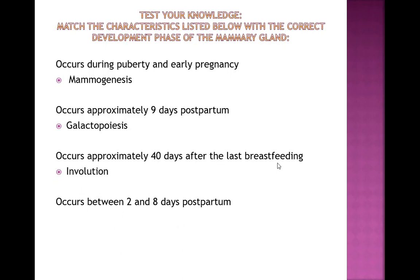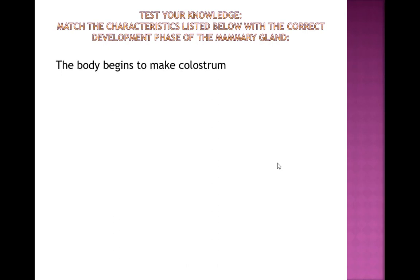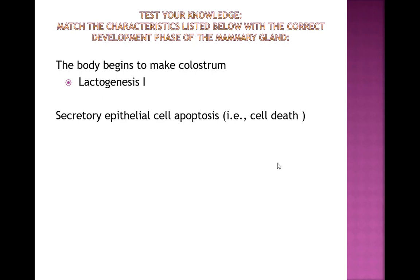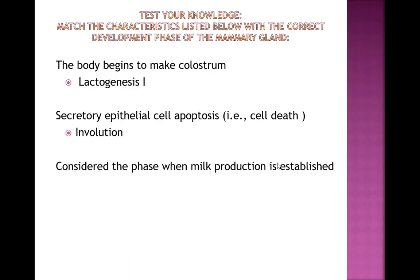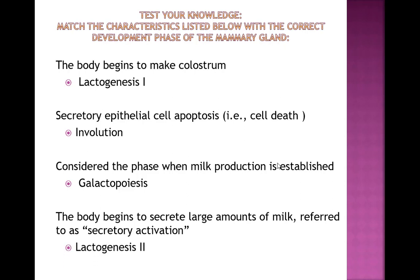Which phase occurs two to eight days postpartum? — Lactogenesis 2. Which phase occurs from mid-pregnancy to two days postpartum? — Lactogenesis 1. When does the body begin to make colostrum? — Lactogenesis 1. Which phase is referred to as secretory epithelial cell death? — Involution. Which phase is when milk production is established? — Lactogenesis 3 or galactopoiesis. When does the body begin to secrete large amounts of milk, known as secretory activation? — Lactogenesis 2.